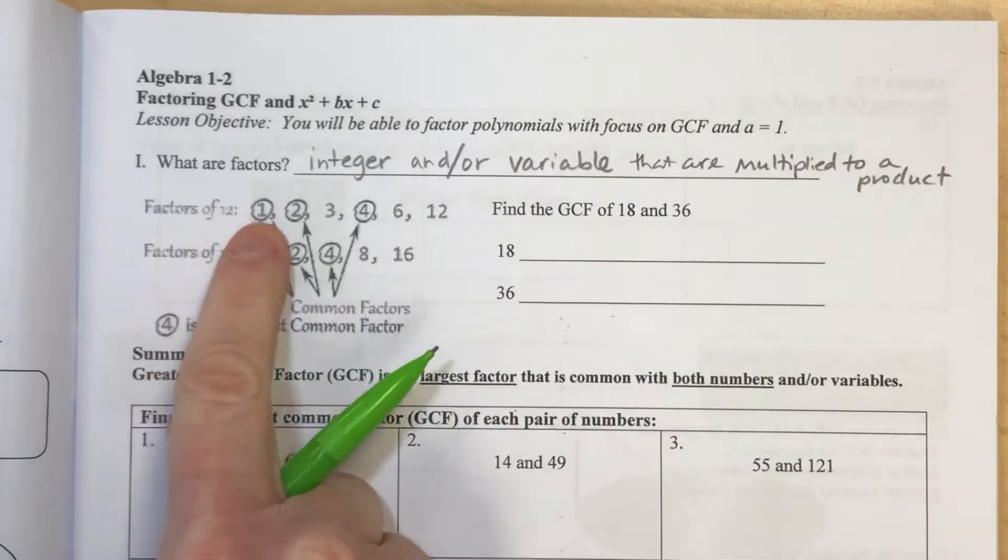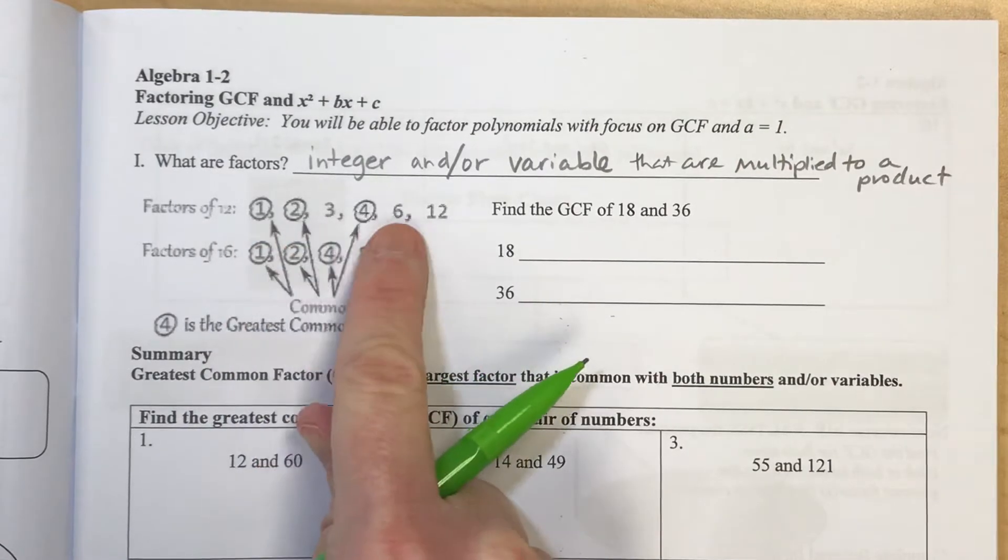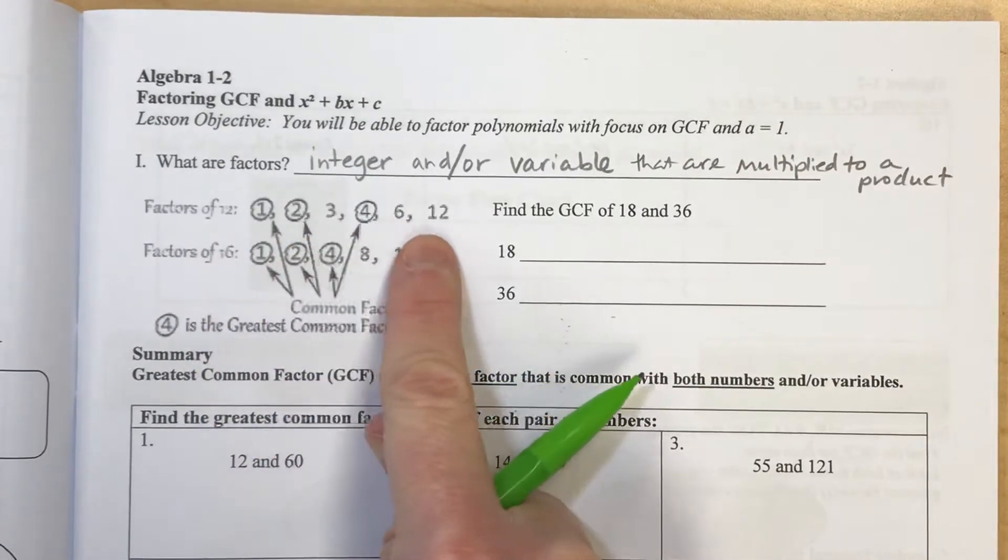And so factors of 12 would be two numbers that multiply to make 12. So 1 and 12, 2 and 6, and 3 and 4, these are just written out numerically.